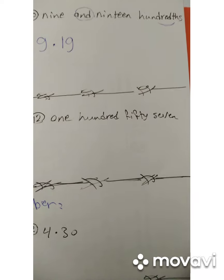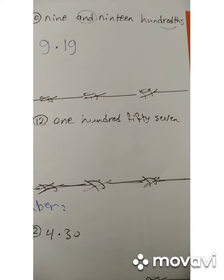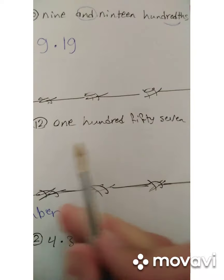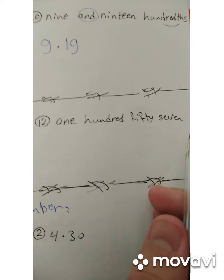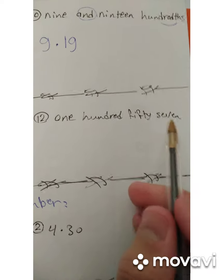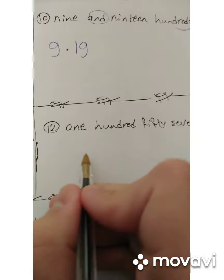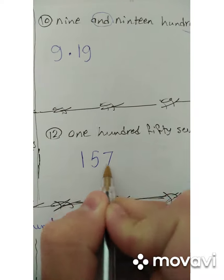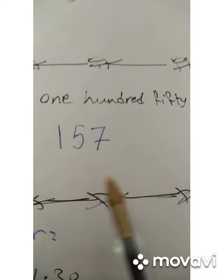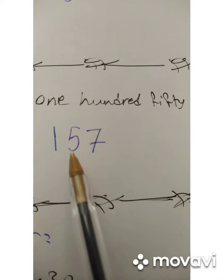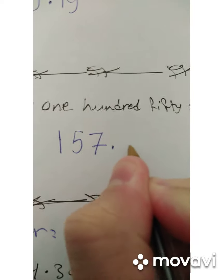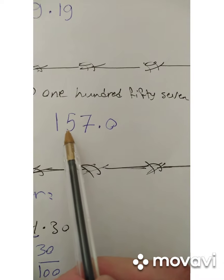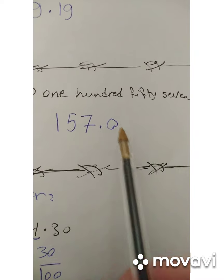Number twelve: one hundred fifty-seven. Is it a decimal? No, we don't have a decimal number, so we write one hundred fifty-seven. Put the decimal point and put zero after it. We read it as one hundred fifty-seven — a whole number with no decimal part.